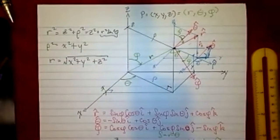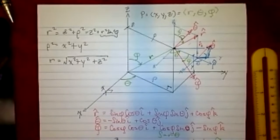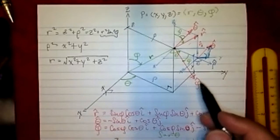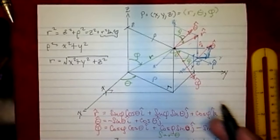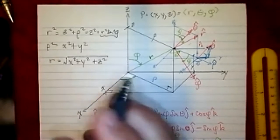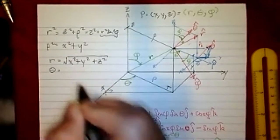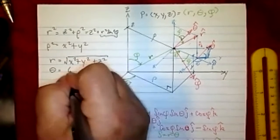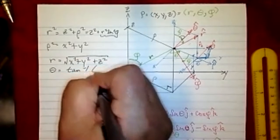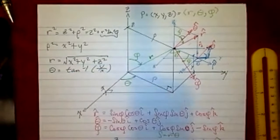So that's how you convert x, y, z to r. Of course, we also need theta and phi, because these unit vectors are actual functions of theta and phi. If I want to know what theta is, that one's pretty straightforward from the previous cylindrical coordinates video — it's just the inverse tangent of y over x.